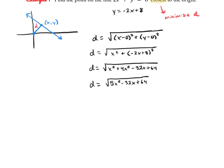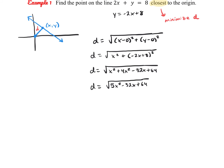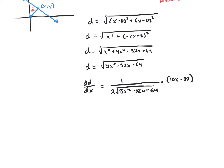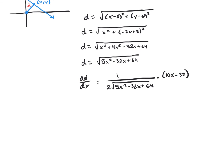We want to minimize this value, so we take the derivative dd/dx. Using the chain rule, we get 1 over 2 times the square root of 5x² - 32x + 64, multiplied by the derivative of the inside, which is 10x - 32. Simplifying by dividing by 2, our derivative is (5x - 16) over the square root of 5x² - 32x + 64.